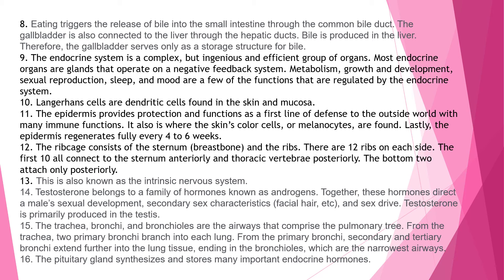Explanation 11: The epidermis provides protection and functions as a first line of defense, and it is where melanocytes — the skin's color cells — are found. The epidermis regenerates fully after four to six weeks. Explanation 12: The rib cage consists of the sternum and the ribs. There are 12 ribs on each side; the first 10 connect to the sternum anteriorly and thoracic vertebrae posteriorly. The bottom two attach only posteriorly.